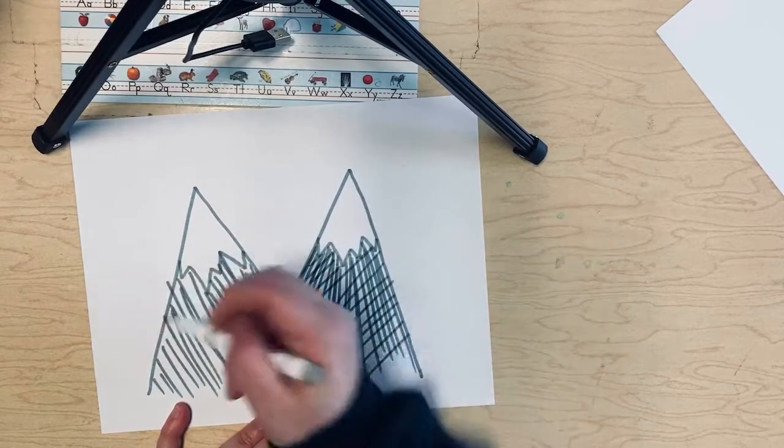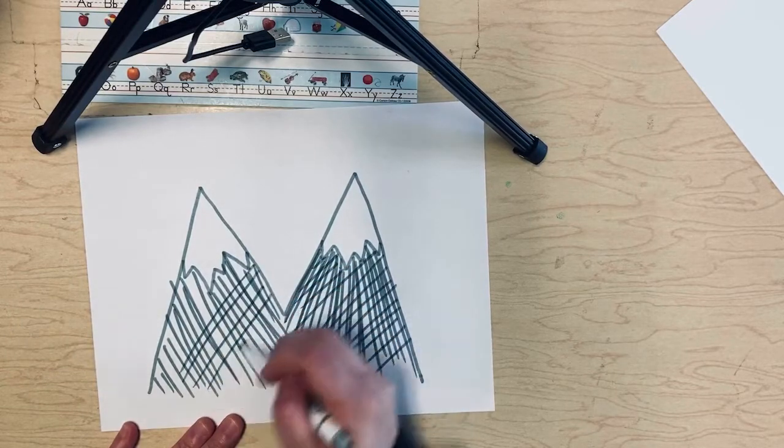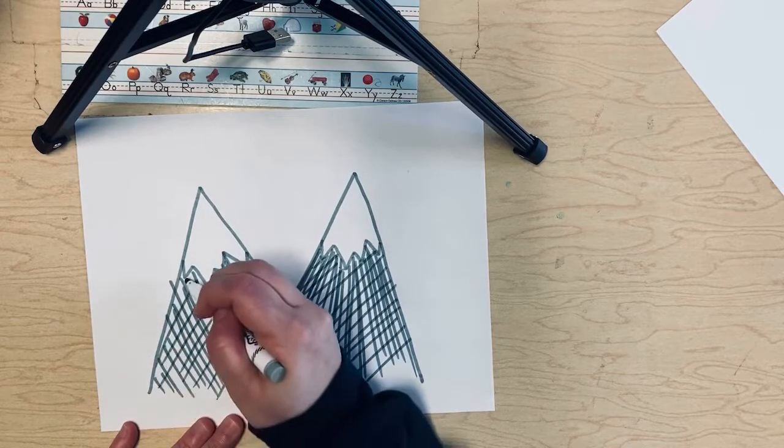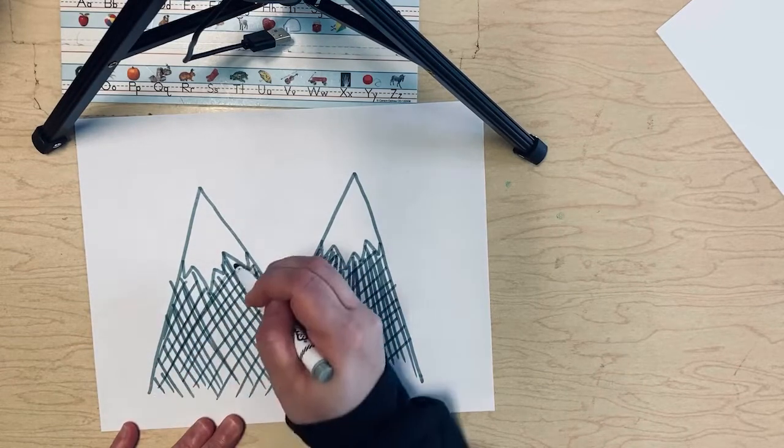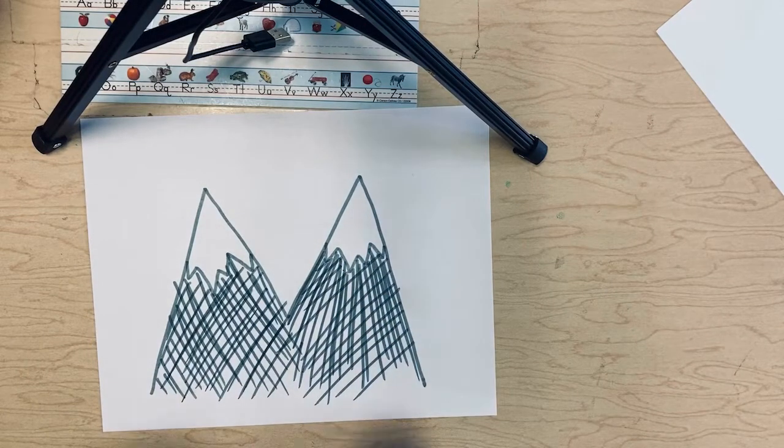So now if I go across it, so it's kind of making this crisscrossing. That's called crosshatching. So I'm going to crosshatch the mountains. So this one, the lines are going this way, so I'm going to crosshatch this way. I like how crosshatching looks. It's kind of like weaving together colors. Alright, there's my two mountains.